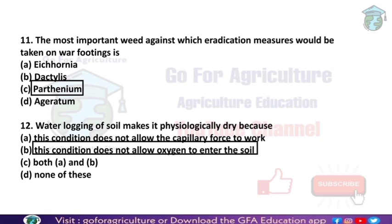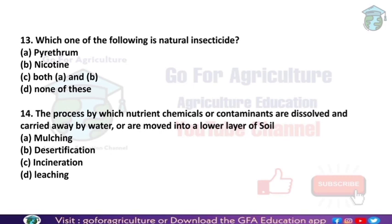Next: which of the following is a natural insecticide? Natural insecticides are pyrethrum and nicotine. Pyrethrum is extracted from Chrysanthemum cinerariifolium, and nicotine is a tobacco extract. These are natural insecticides.